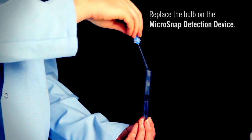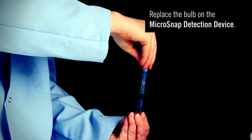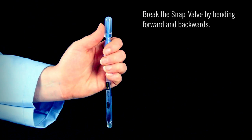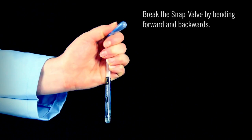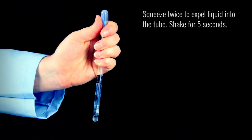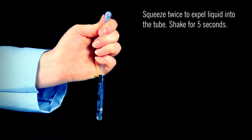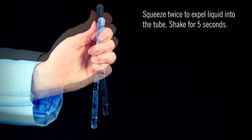Replace the bulb on the detection device. Hold the device in your fist and use the thumb and forefinger to break the snap valve by bending the bulb forward and backward. Squeeze the bulb twice to expel liquid into the tube and shake for 5 seconds.